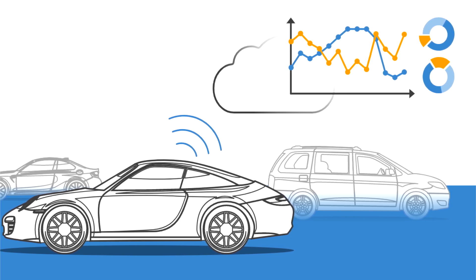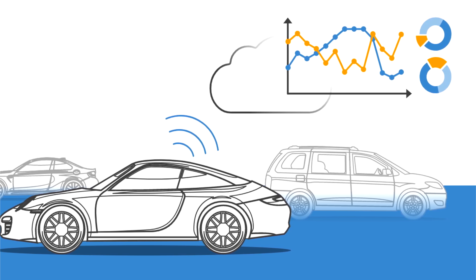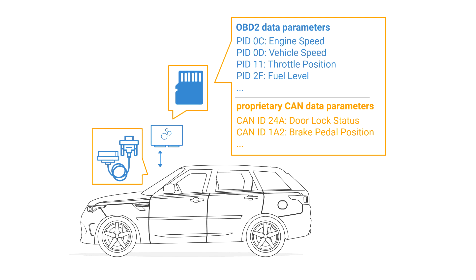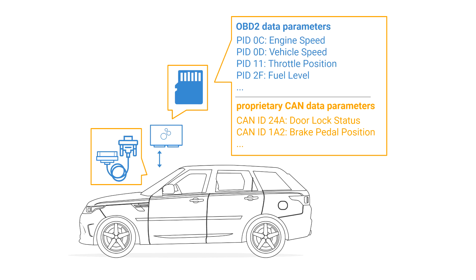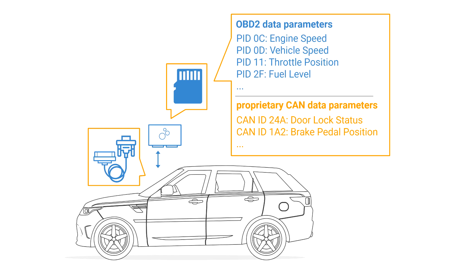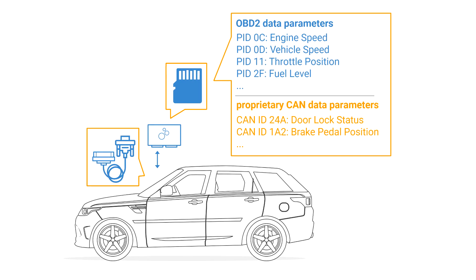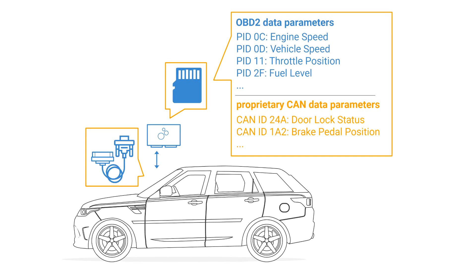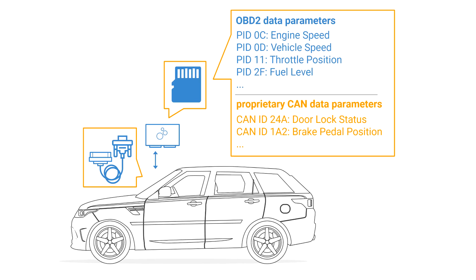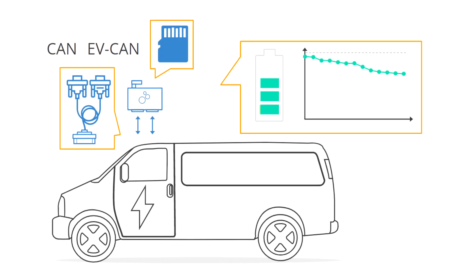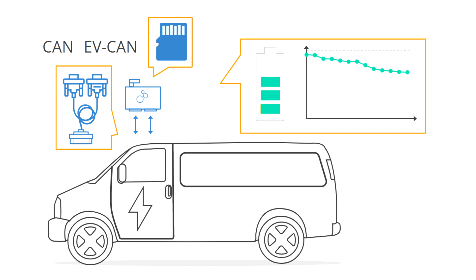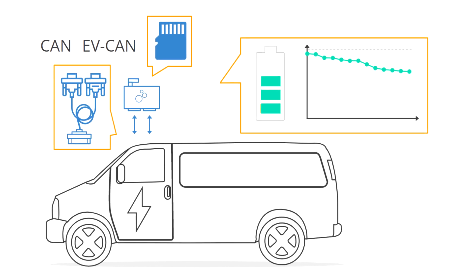A common practical OBD2 use case for OEMs is to log data during late-stage prototype field tests. This often involves recording data over multiple months. As an OEM, you'll often need to log both raw proprietary CAN bus data and OBD2 data in parallel. In some cases, it may also be relevant to request proprietary OBD2 PIDs and UDS multi-frame messages.